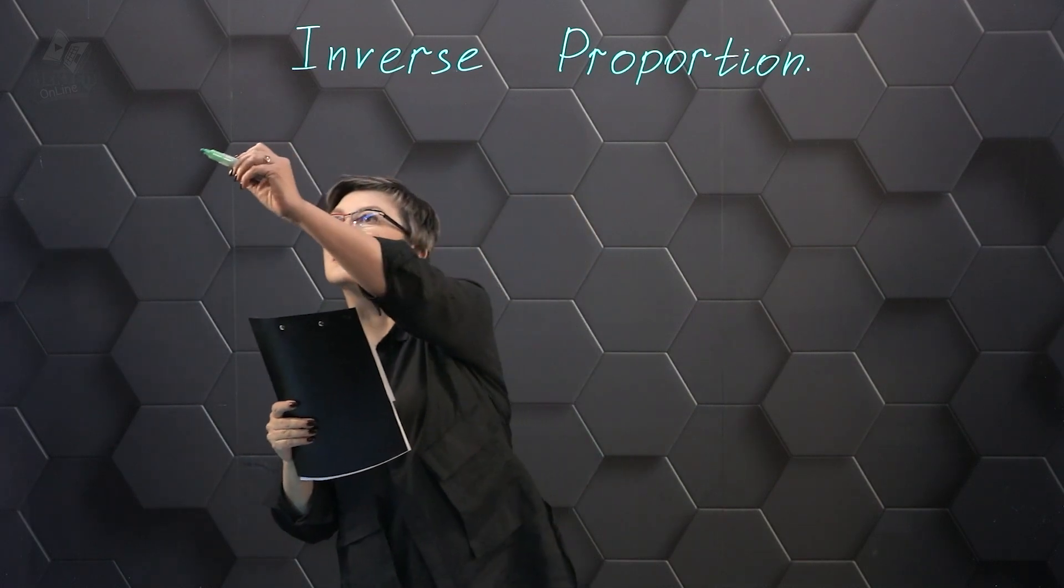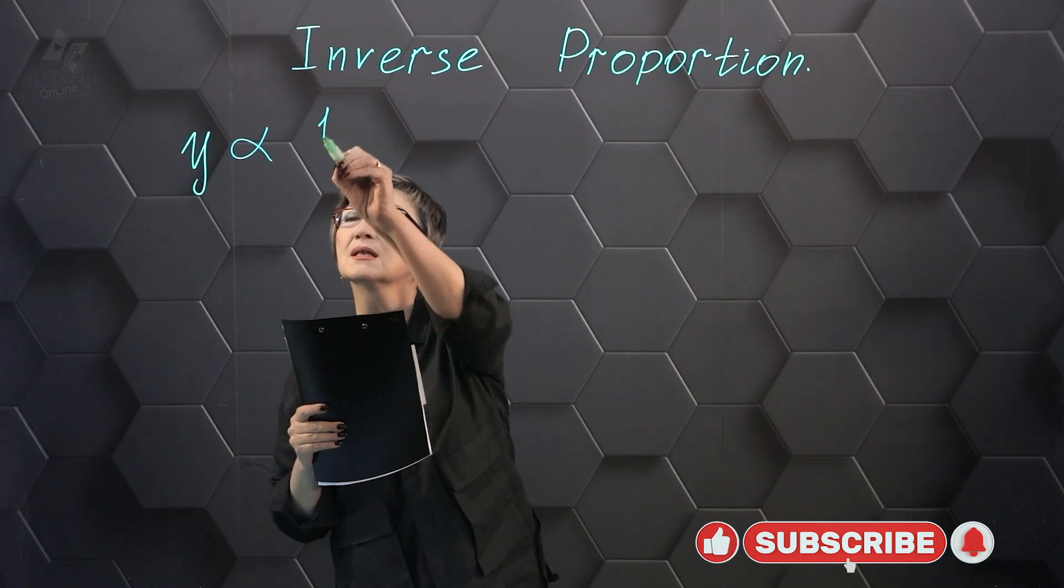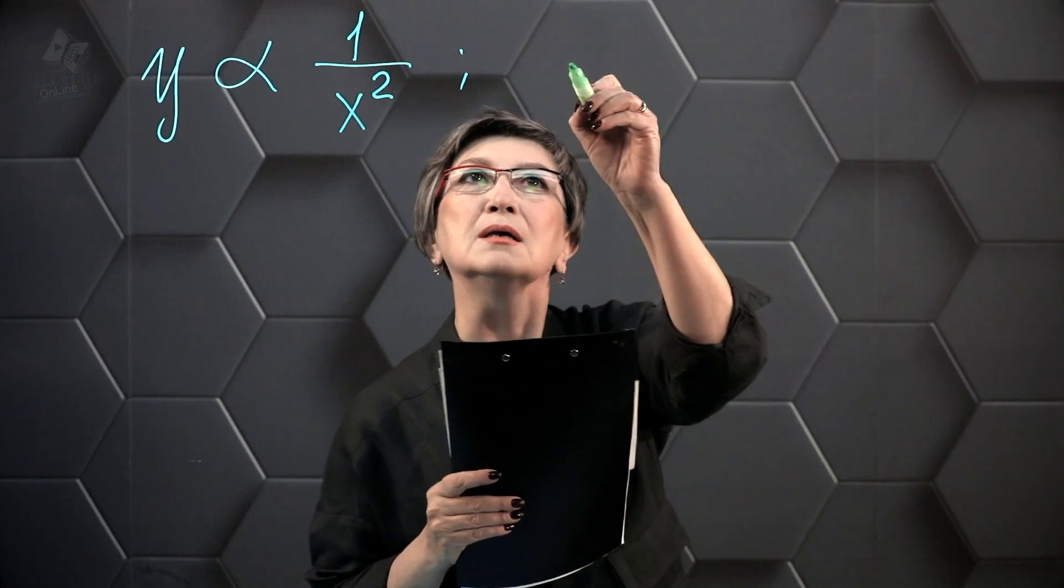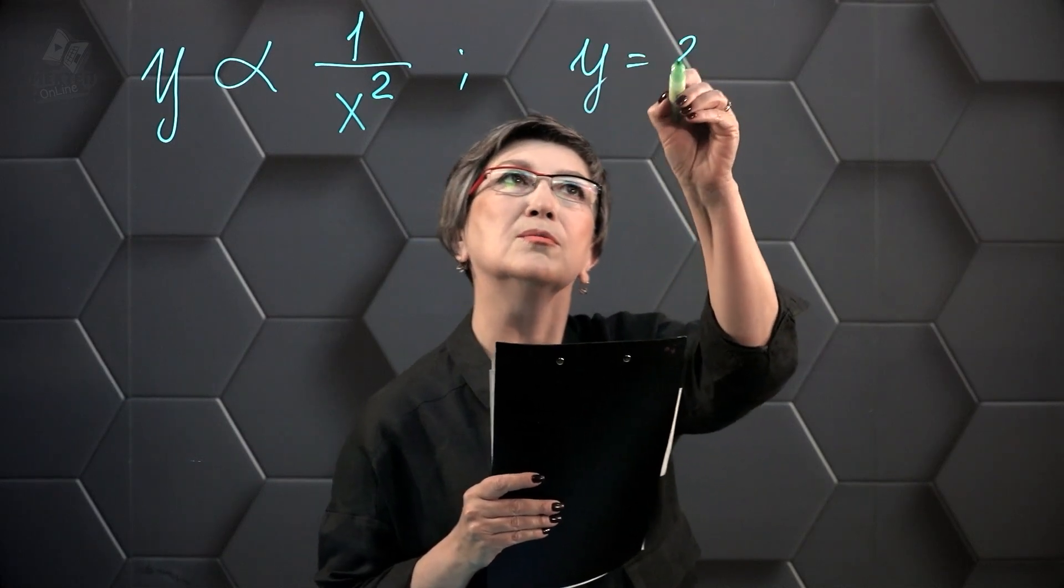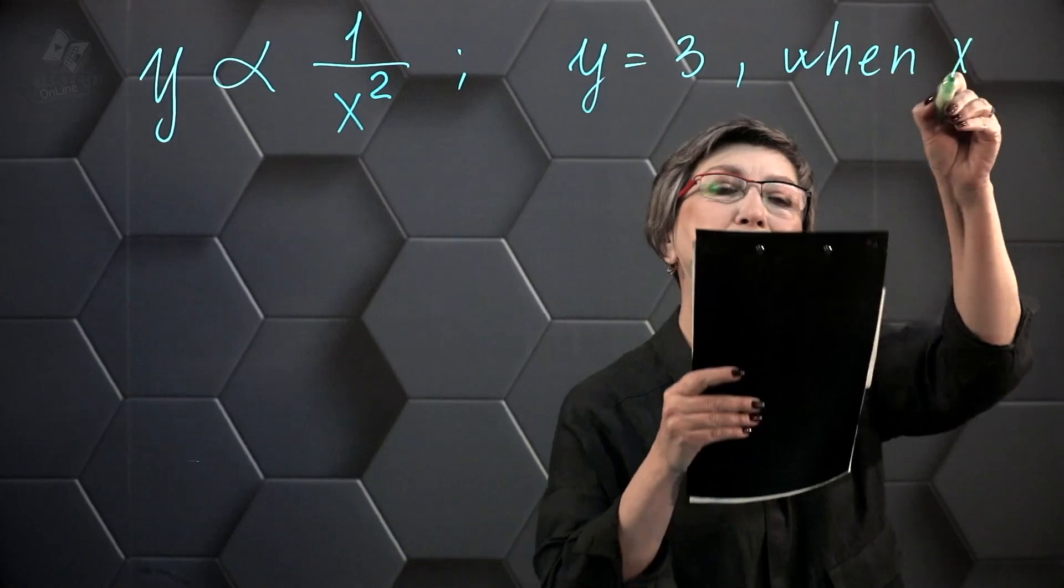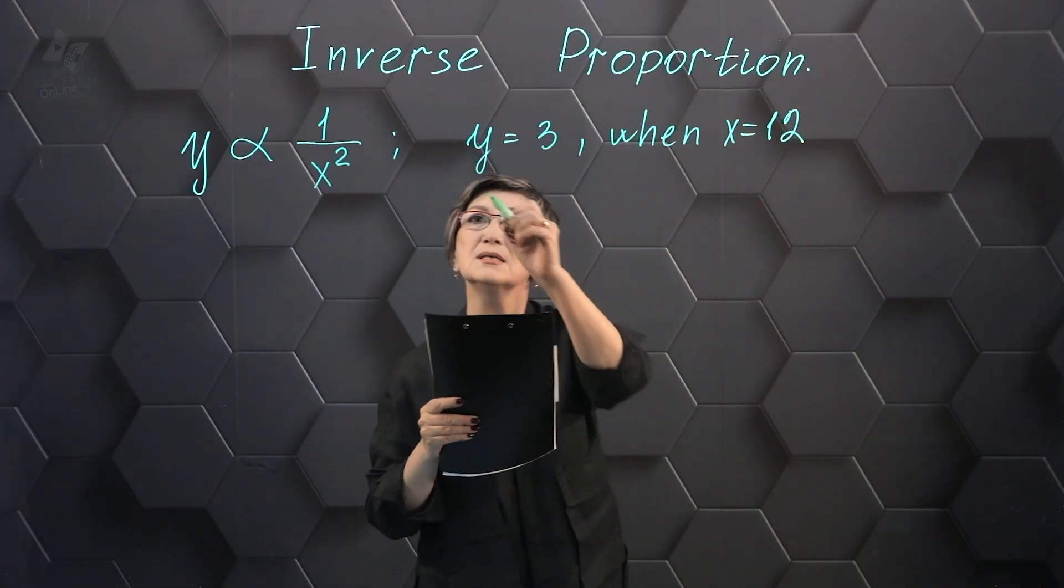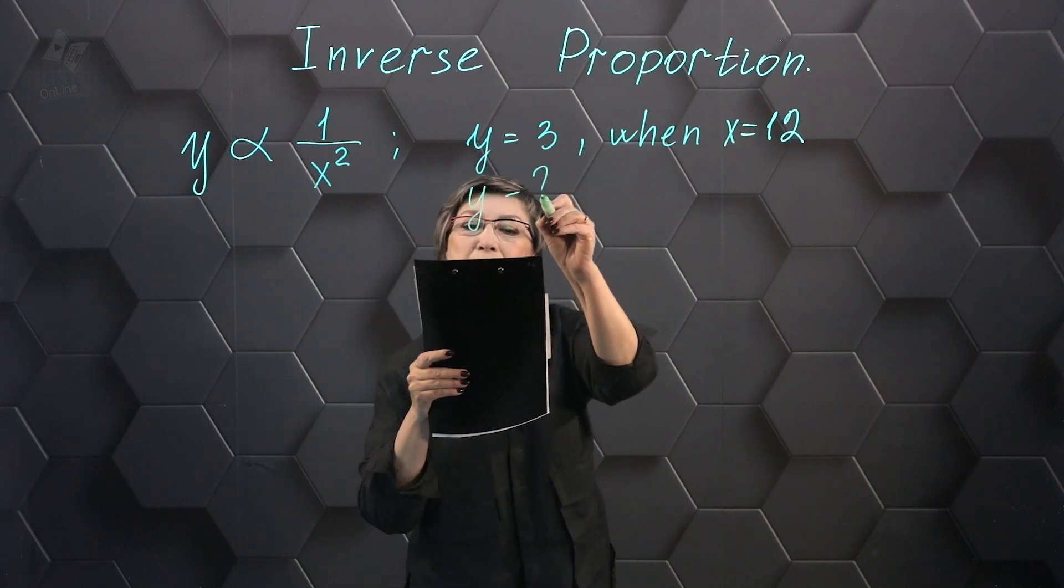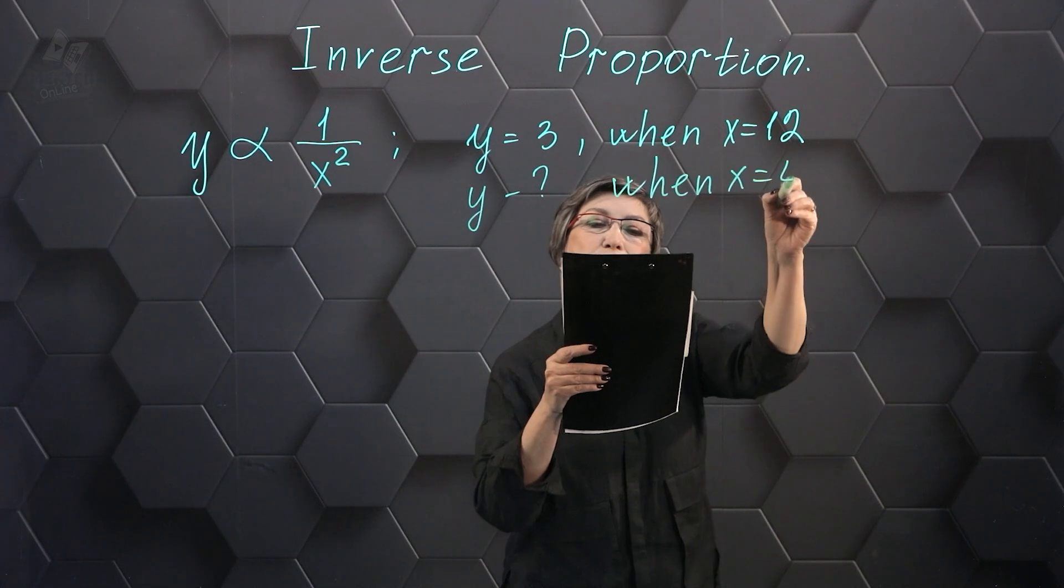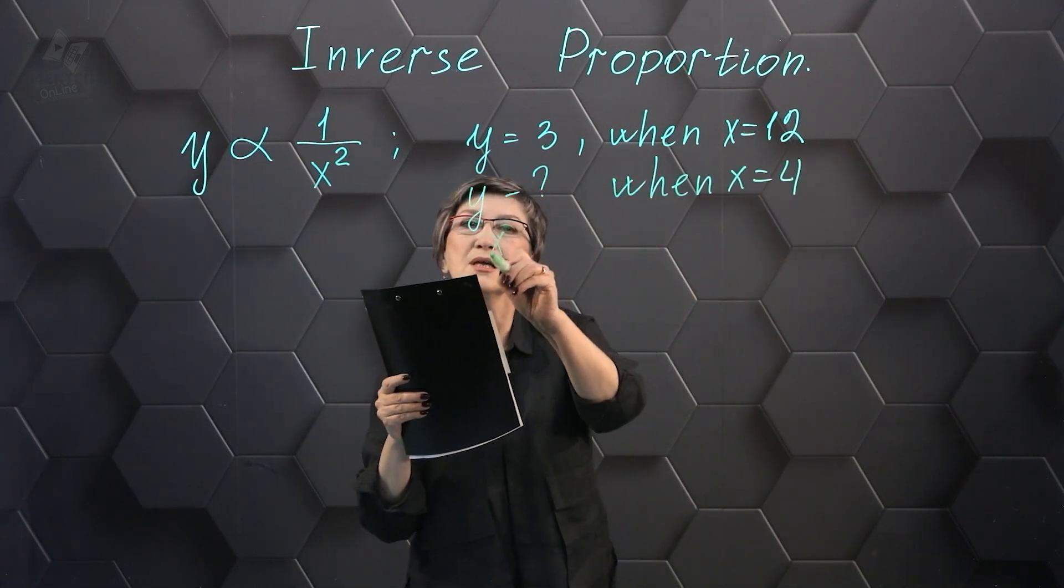The condition says that the value of Y is inversely proportional to the square of X. Y equals 3 when X equals 12. We need to find Y when X is 4, and we need to find the value of X when Y is 12.